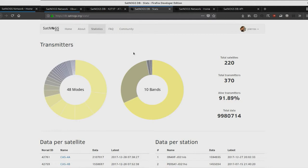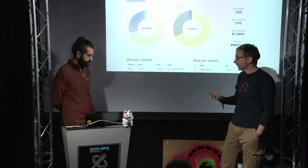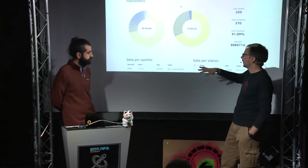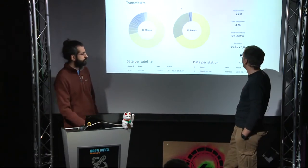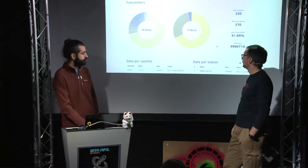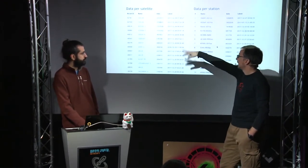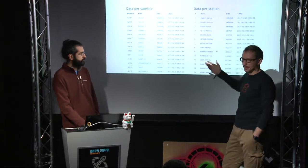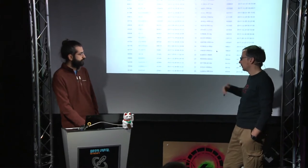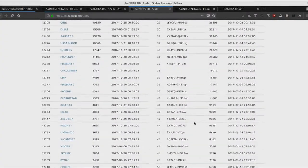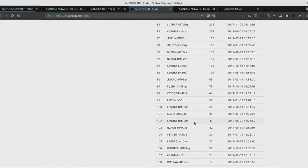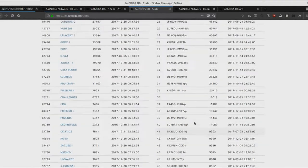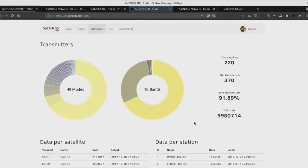Another part of DB is that since it's a central place used as a single source of truth for satellites, we also started pulling back decoded telemetry data for satellites. The statistics page shows how many different types of transmitters we have — 370 transmitters, 220 satellites — and how many telemetry packets per satellite, with attribution back to the observer.